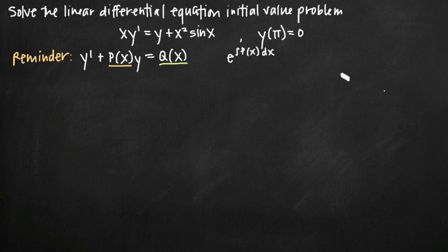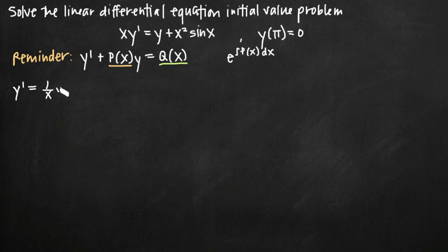The first thing we want to do to change our equation into standard form is get y prime by itself. We only have y prime occurring once in our equation, and in order to get it by itself, we just need to divide through by x. When we do that, we'll get y prime is equal to — dividing through by x — 1 over x times y, which is the same as y over x. Then when we divide x squared sine of x by x, one x cancels and we're just left with x sine of x.